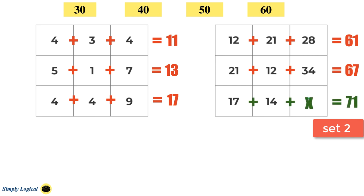So the equation to find the missing number in third row becomes 17 plus 14 plus x equals 71. After solving this equation, x is equal to 40. Thus, missing number is 40.